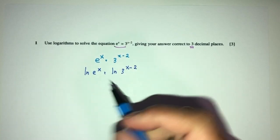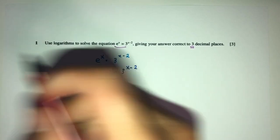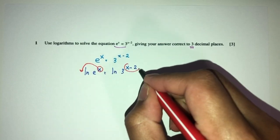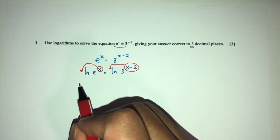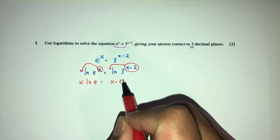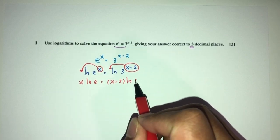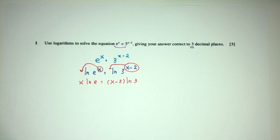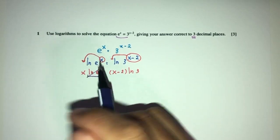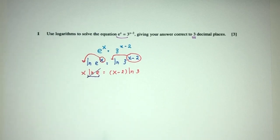By the laws of logs we can bring this down to here and these down to here. So you will have x ln(e) = (x-2) ln(3). Now this one obviously is just 1 so you will cancel out. ln(e) is 1. Now what happens to the rest?